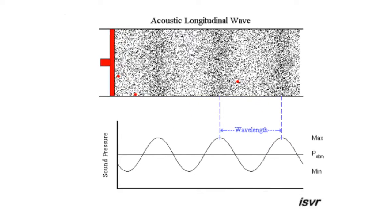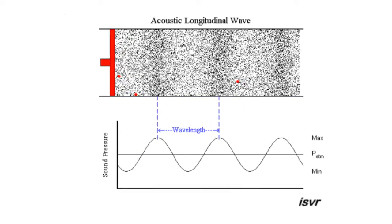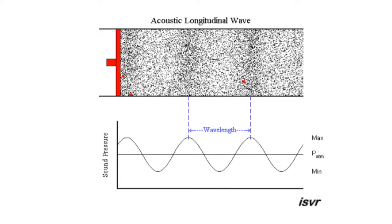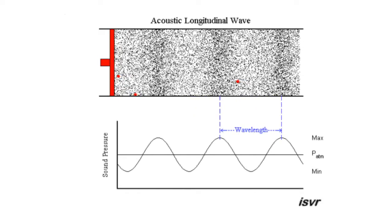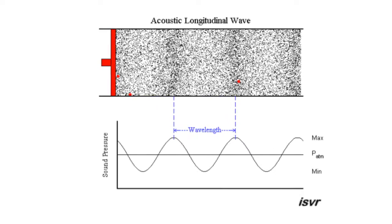As the object vibrates, during its movement forward, it pushes air particles, creating a region of compressed air or high pressure. These particles push the next ones, and those push the next ones, propagating a region of high pressure.